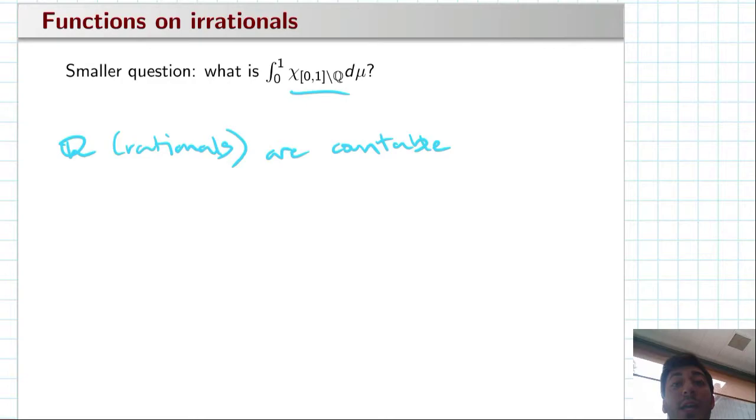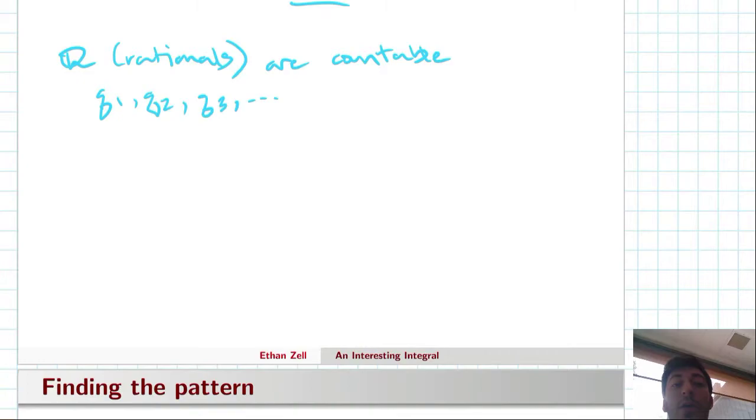Which means that we can enumerate them. There are some listing q1, q2, q3 which enumerates all of our rational numbers. When we go infinitely, they're countably infinite many. So we can write Q as a union of these singletons qn where n goes from one to infinity.